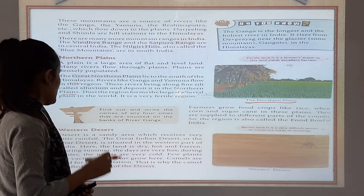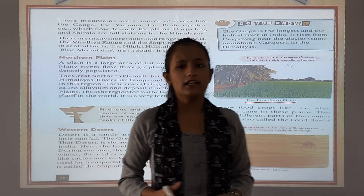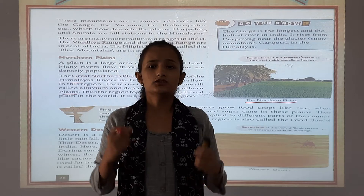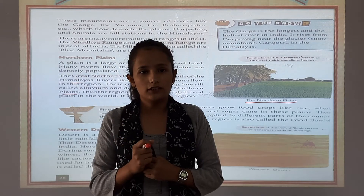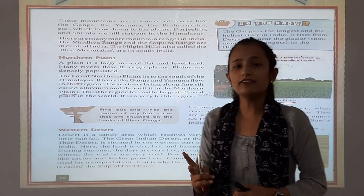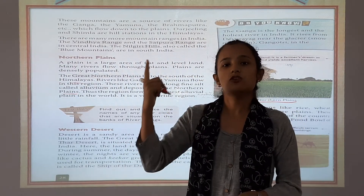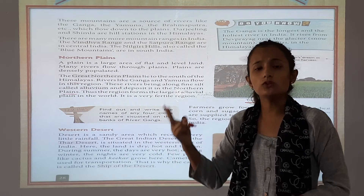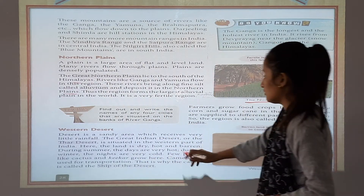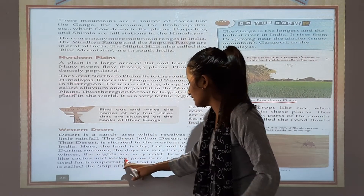In the desert area, it is too hot in summer season and too cold in winter season. Two plants we can see in the desert area: cactus and desert shrubs.